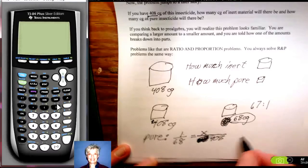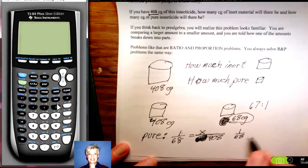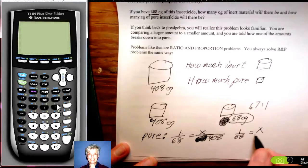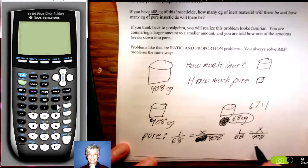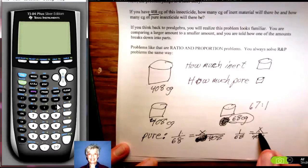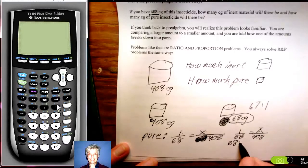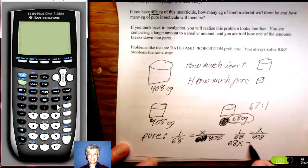Let me write it again. One over 68 equals x over 408. This is a proportion. Remember proportions from pre-algebra. Proportions are very easy to solve because all you have to do is cross multiply. Every time you have one fraction equals one fraction, you can actually skip a step by cross-multiplying. So, I'm going to multiply 68 times x.